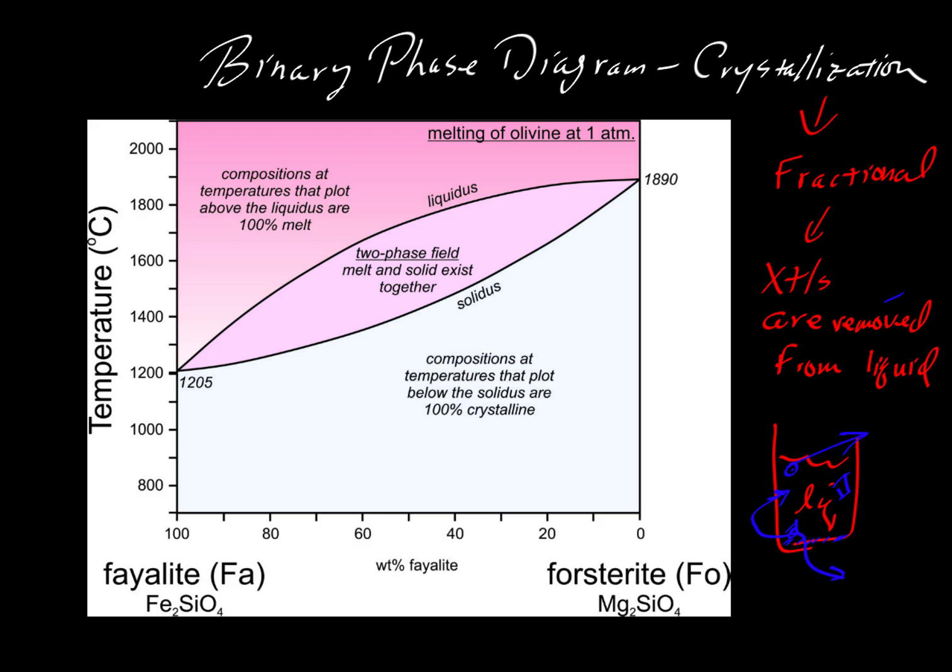And that has kind of a special meaning when we go to the phase diagram that we have here. So let's say we have something that is 40% fayalite, and that bulk composition is completely liquid. So that means that it has a temperature that's up here somewhere, let's put it somewhere well above 1890. So the whole thing is liquid. As it cools and begins to crystallize, the first crystals will form here at a temperature of about 1800 degrees, and those crystals will have a composition of, well, it looks like about FO95, FA5. So about 5% fayalite, 95% forsterite.